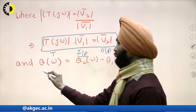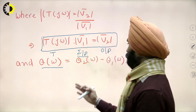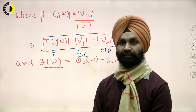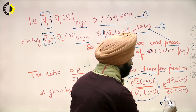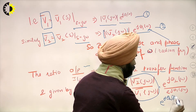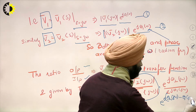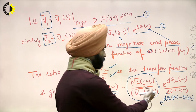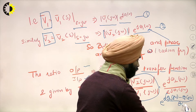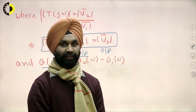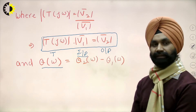The phase angle θ(ω) = θ2(ω) − θ1(ω). This gives the phase component of the transfer function, and θ(jω) represents the attenuation or loss in the system.